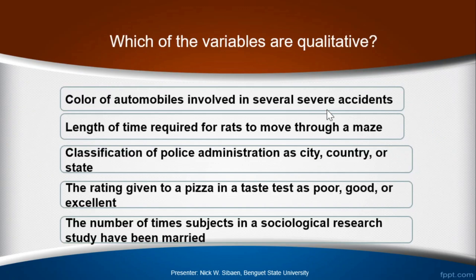Let's have another question. We have five variables and we're going to identify which are qualitative. The first variable is the color of an automobile involved in several severe accidents. Second, length of time required for rats to move through a maze. Third, classification of police administration as city, country, or state. Fourth, the rating given to a pizza in a taste test as poor, good, or excellent. Fifth, the number of times subjects in a sociological research study have been married. Which of the five variables are qualitative?